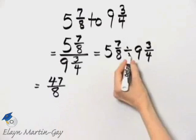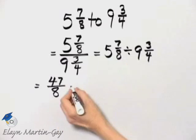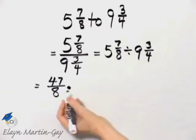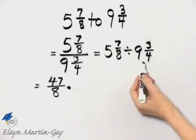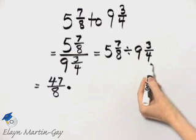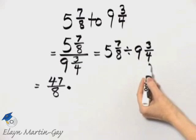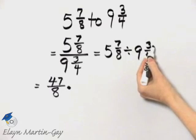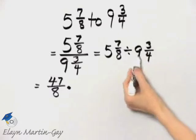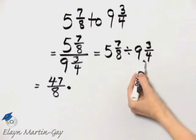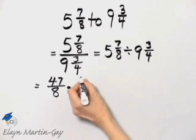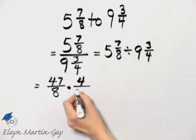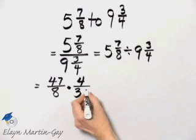Now I'm going to go ahead and make this multiplication, but remember whatever this is, I will then take the reciprocal. 4 times 9 is 36, plus 3 is 39, so this is 39 over 4, so it's times 4 over 39.